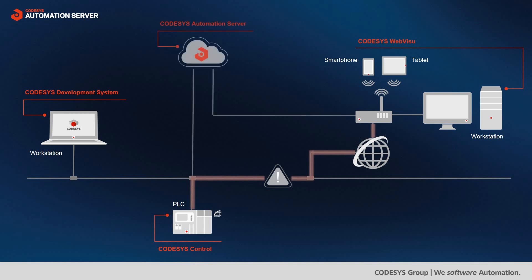The CODESYS Automation Server takes over this work for you now. It allows for securely and easily accessing web visualizations from wherever you are located, by simply tunneling it from the PLC through the server. The server can only be accessed by selected and authorized users. The communication is secured through TLS encryption and the service software is always up to date. This means you do not have to worry about or struggle with any security precautions anymore. You can rely on the Automation Server with a good conscience.